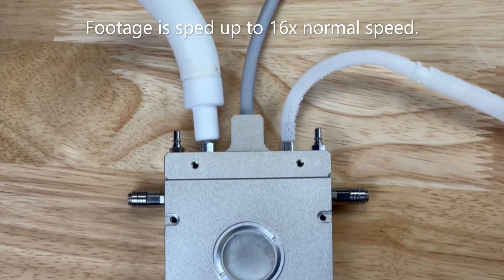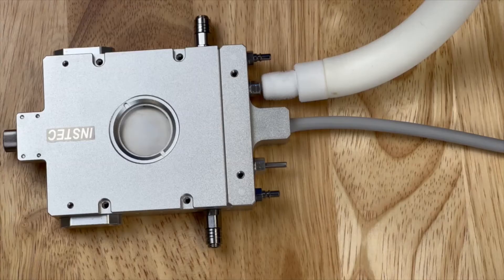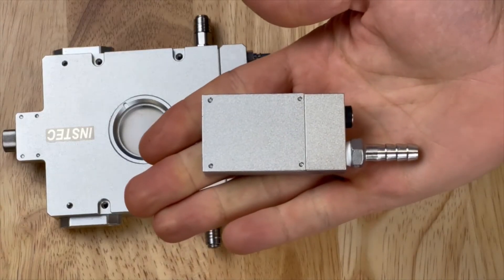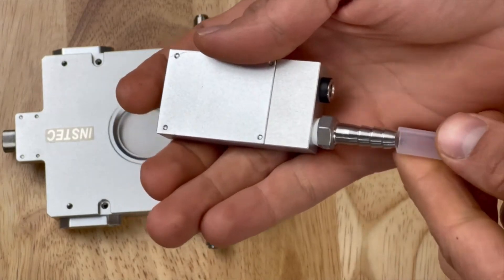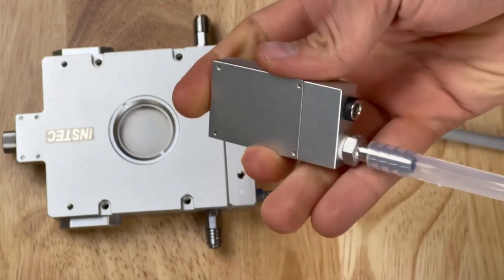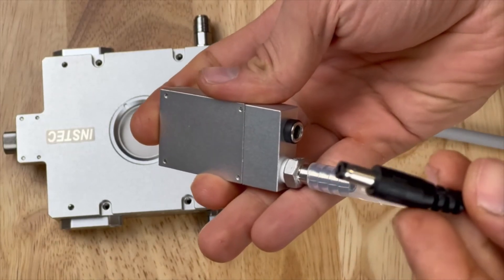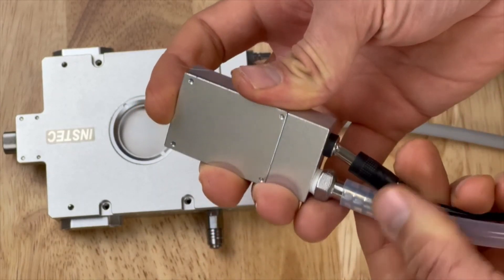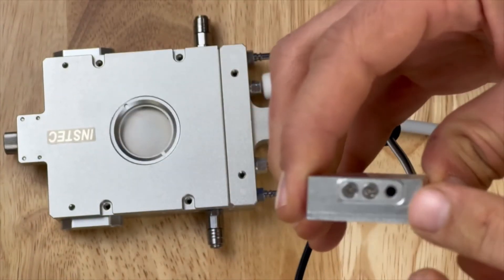INSTEC offers vacuum insulated tubing or LN2 exhaust heating as an optional additional component. The LN2 exhaust heating is simple to use. Simply connect the standard silicone rubber tube to the outlet barb. Connect the power cable to the heater and the power supply. Then connect the exhaust heater inlet to the thermal stage cooling outlet port.